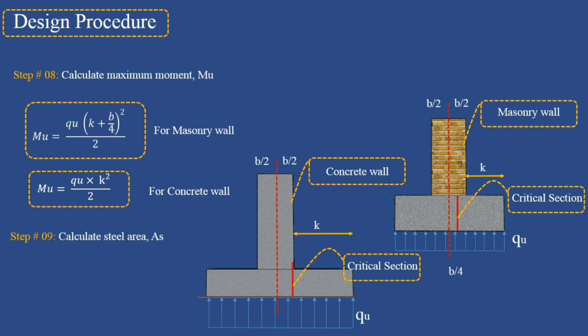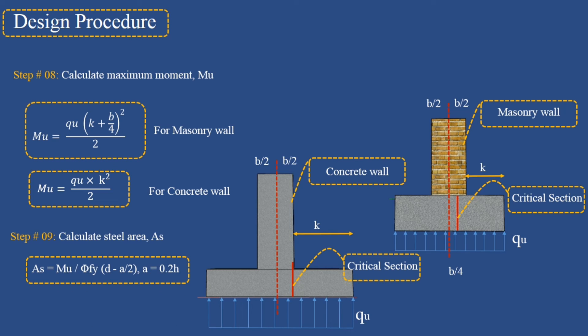Step 9: Calculate the steel area. Using the trial and success method for determining steel area, the steel area is calculated from the corresponding equation.